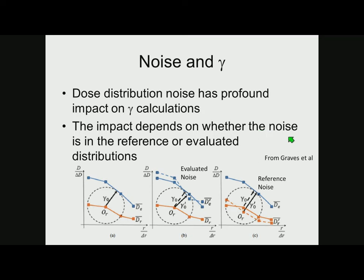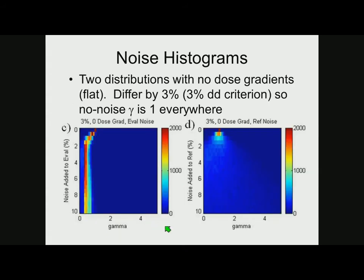Noise has a profound impact on gamma calculations, especially as we move toward Monte Carlo doses. Graves made a nice graph to show this: if you add noise to the evaluated distribution, you're basically shifting those points up and down randomly. Since gamma is the minimum, on average you'll get closer — so gamma will typically get artificially small as the evaluated distribution gets noisy. If you add noise to the reference, you're moving the origin up and down, and gamma just becomes as noisy as the variation in the reference.